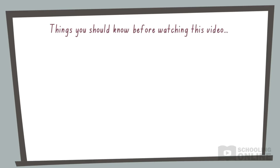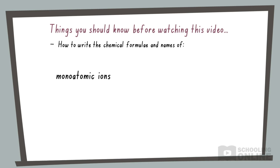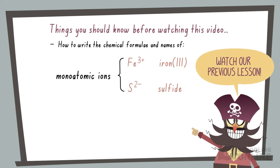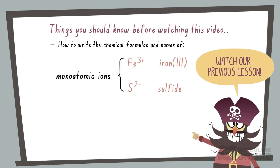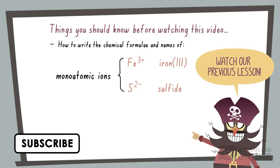Before continuing further, make sure you know the rules for writing the chemical formulae and names of monoatomic ions, such as iron-3 and sulphide. If you aren't sure how to do this, watch our previous lesson.